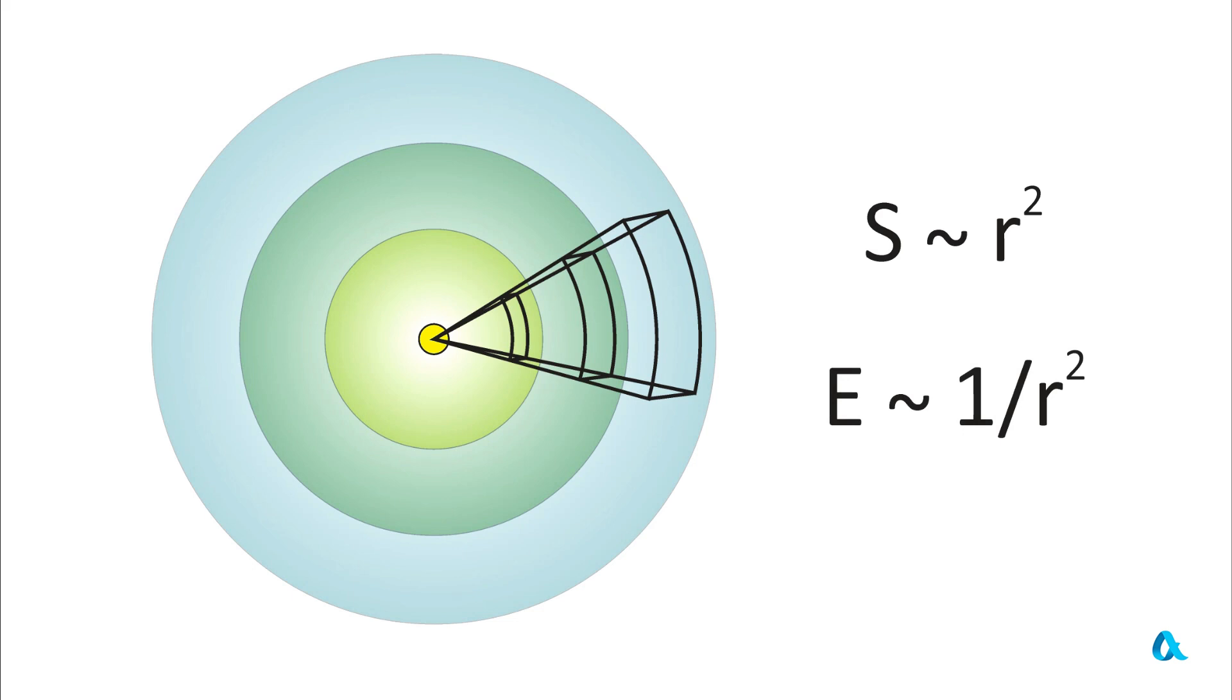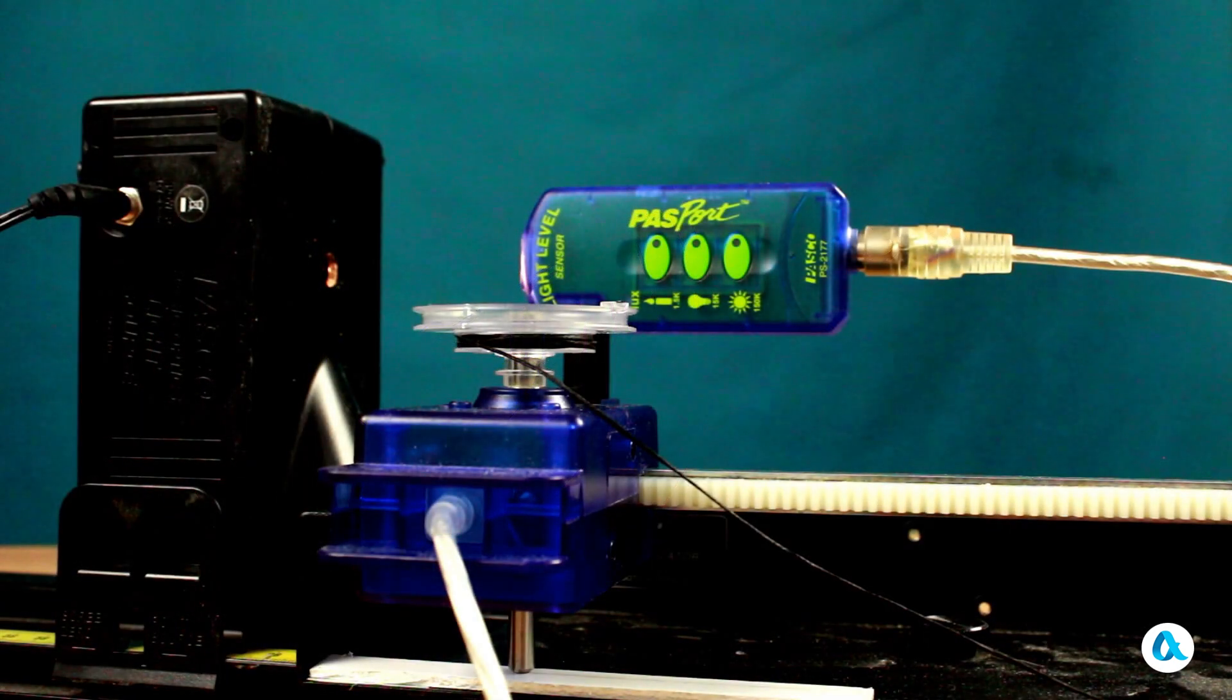And now we will test this in practice, and for this purpose I have assembled such a specific configuration. Here I possess a source of illumination, a light bulb located within this container. Positioned directly opposite it is the light level sensor. The distance from the light bulb to the sensor window is currently 8 cm in length at the present moment in time.